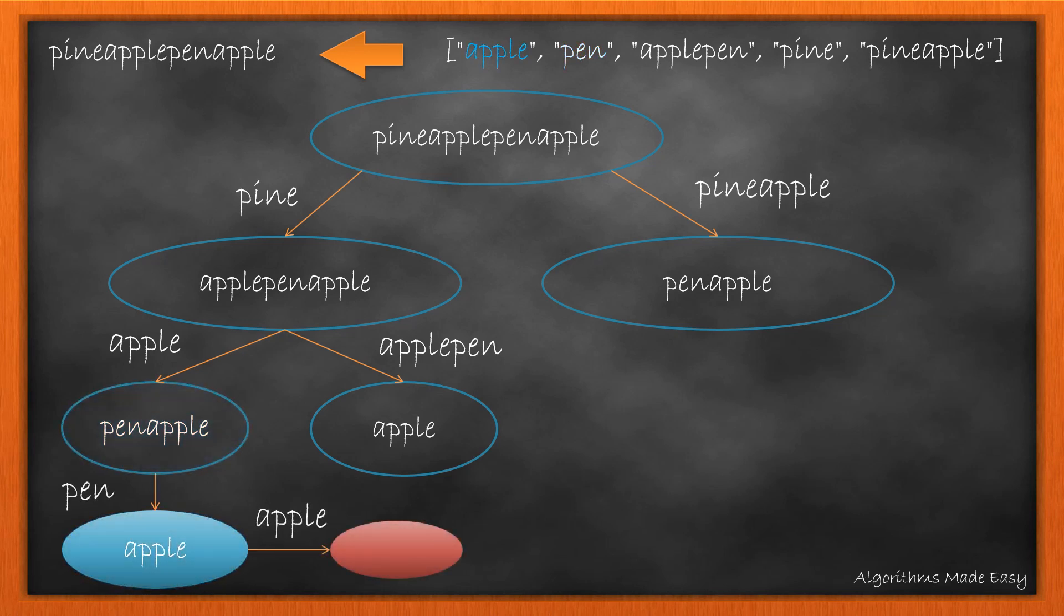Now, as we try to look for prefixes for apple, we find the whole word apple in the dictionary. So, after using it, we are left with an empty string. This will be the exit condition. And we can see we got a splitted string as shown.